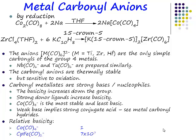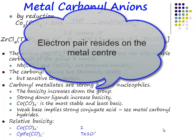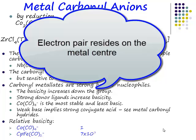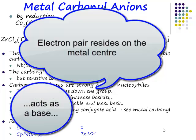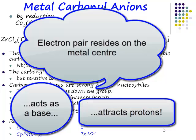We're talking about a pair of electrons centred on our transition metal. And if we have a pair of electrons centred on our transition metal, then it's going to act as a base. And if it acts as a base, it will attract protons.